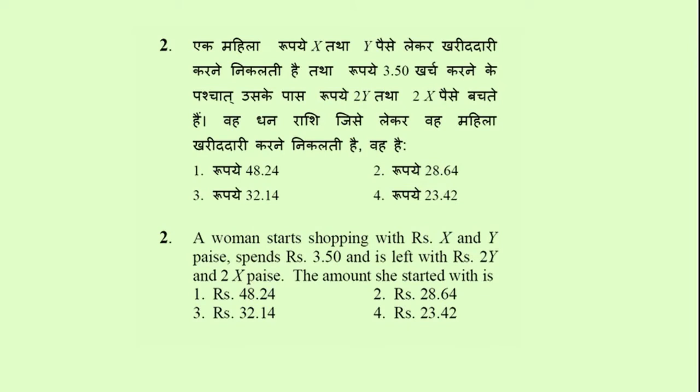Problem number 2: a woman starts shopping with rupees x and y paise, spends rupees 3.50, and is left with rupees 2y and 2x paise. The amount she started with is: option 1 – rupees 48.24, option 2 – rupees 28.64, option 3 – rupees 32.14, option 4 – rupees 23.42.